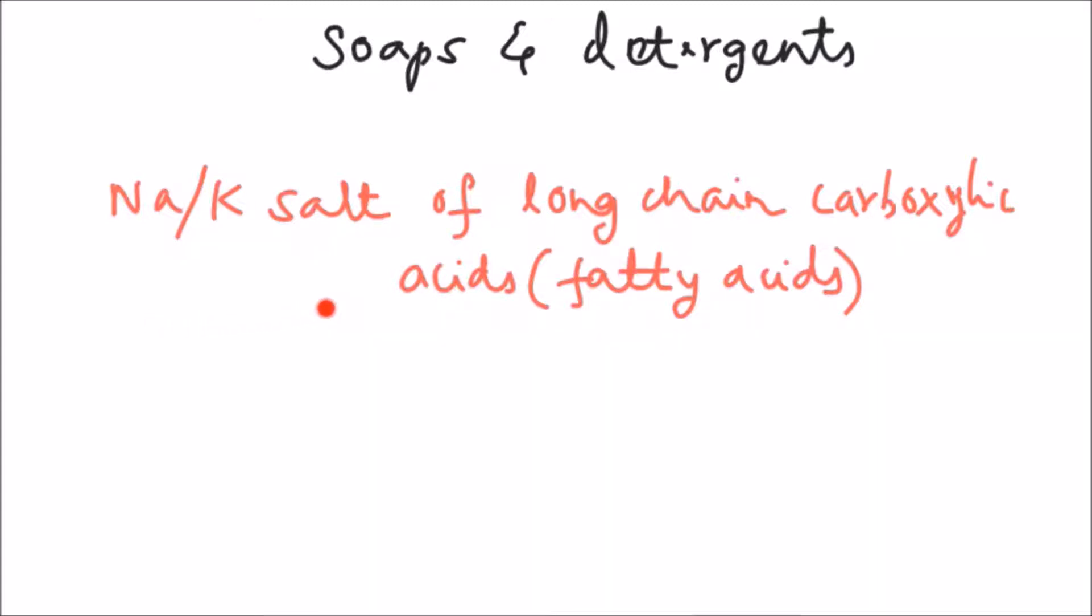Soap is a sodium or potassium salt of long chain carboxylic fatty acids. Sodium salts of fatty acids are called hard soaps, whereas potassium salts are known as soft soaps.